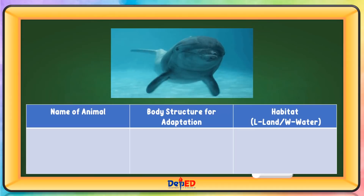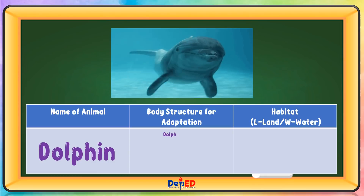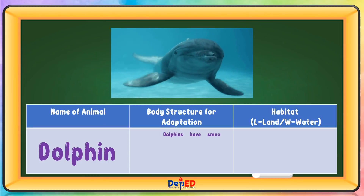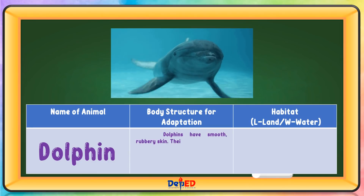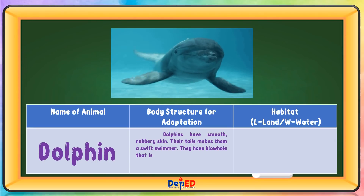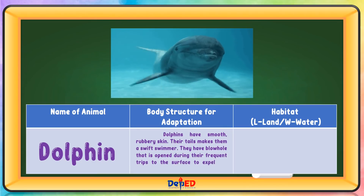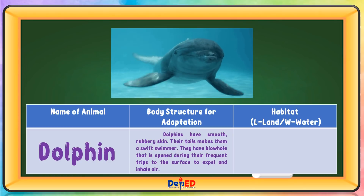Name of animal: Dolphin. Body structure for adaptation: Dolphin have smooth, rubbery skin that makes them swift swimmers. They have a blowhole that is open during their frequent trips to the surface to expel and inhale air. Habitat: Water.